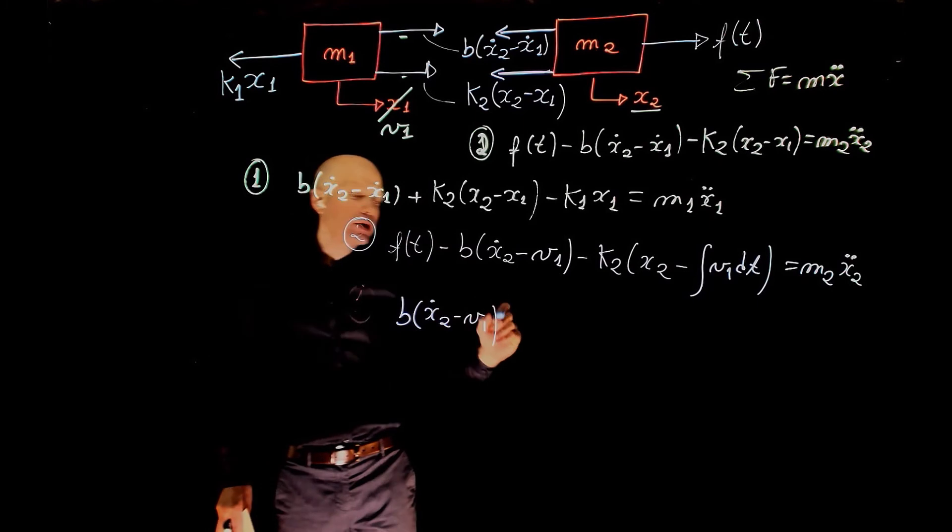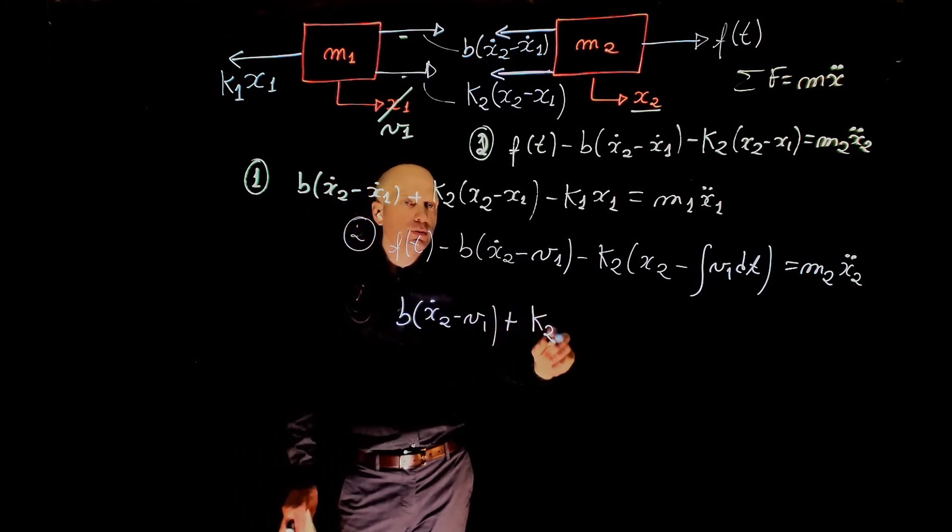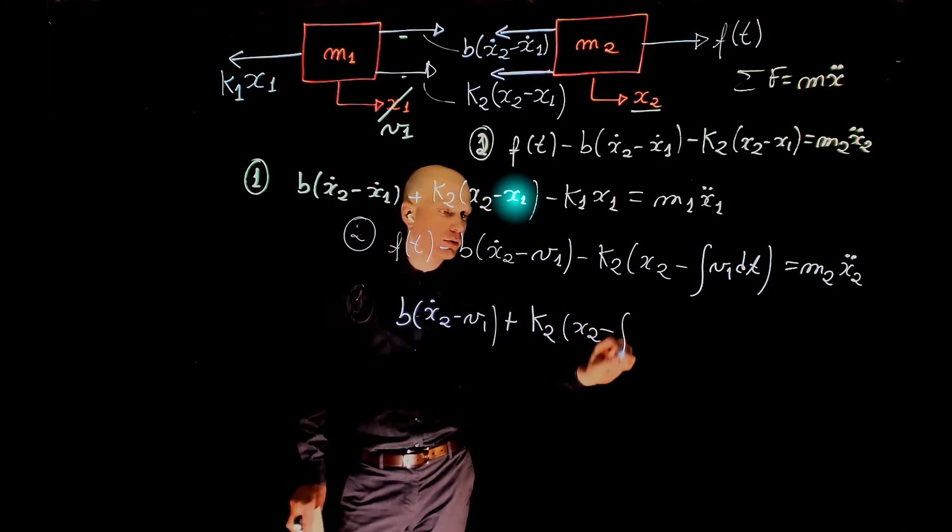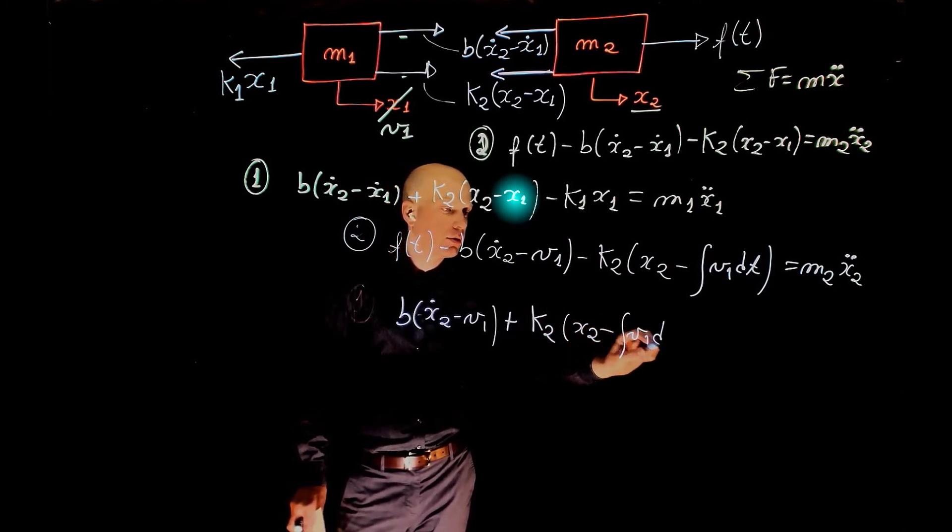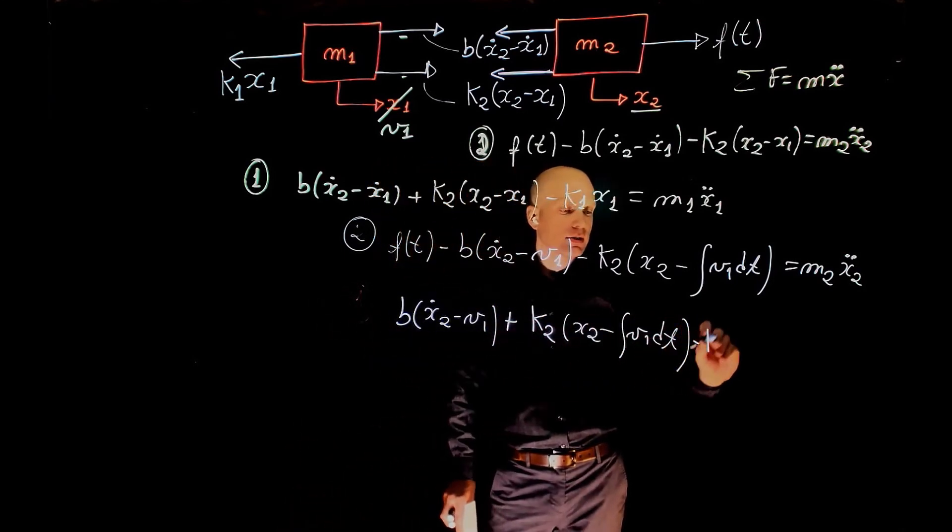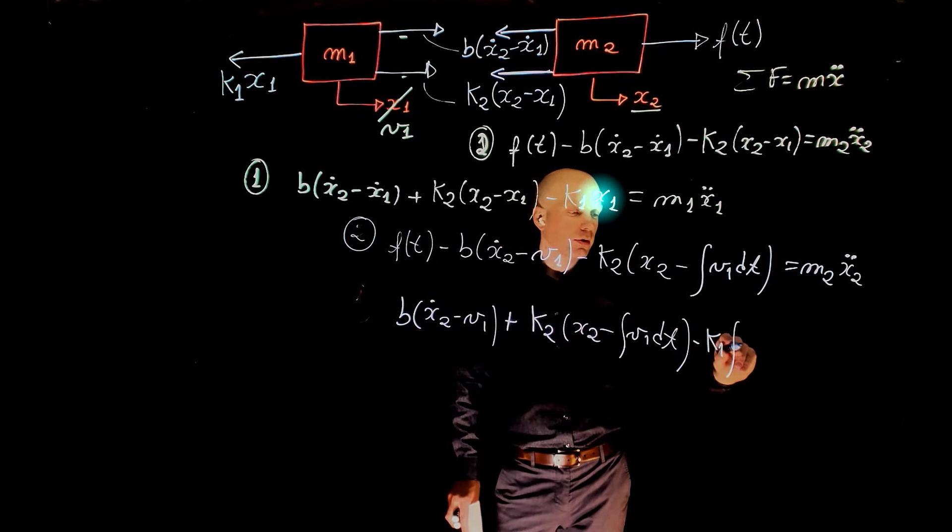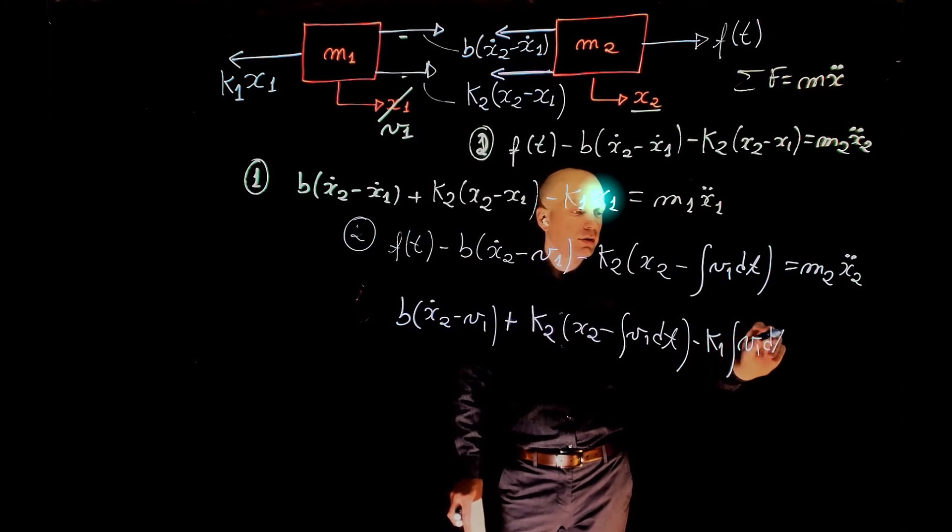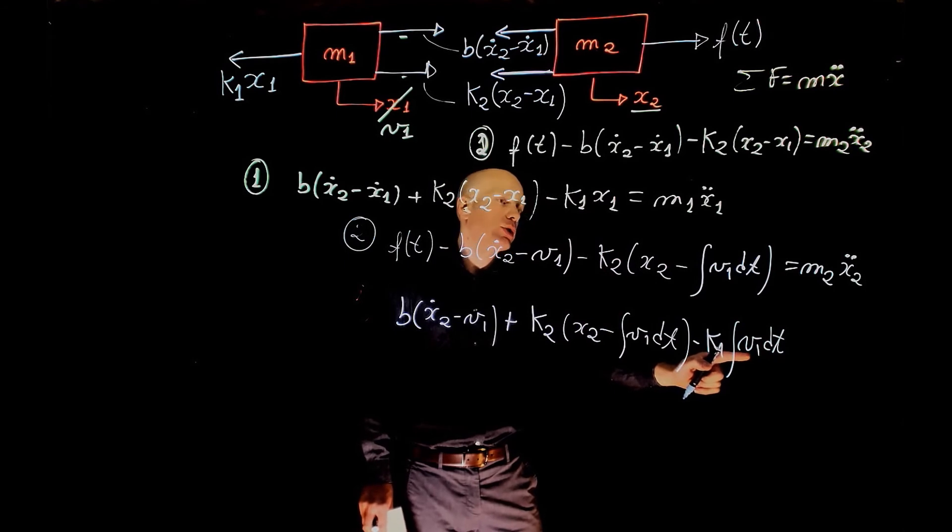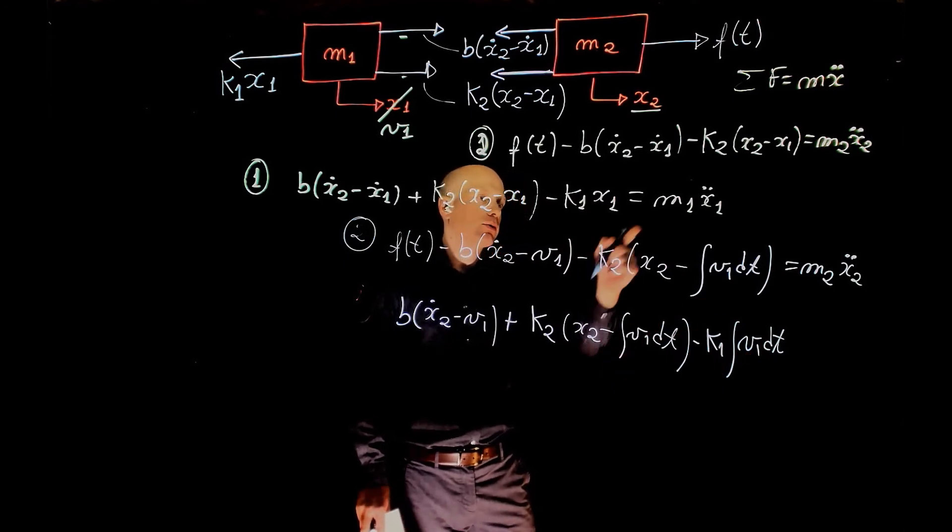Plus k2 x2 minus, again, integral of V1 dt minus k1 integral of V1 dt. This is position, but we now are interested in expressing everything with respect to velocity.